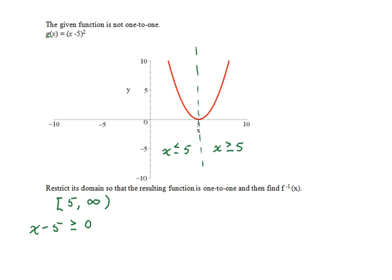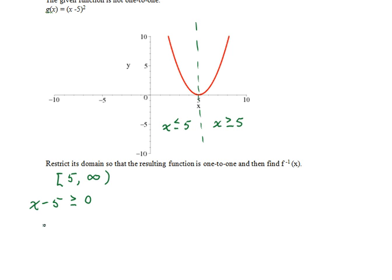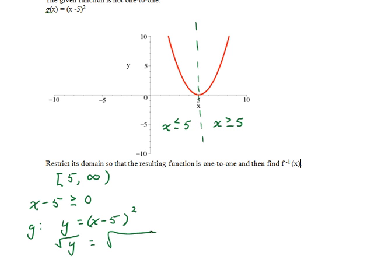Now as we proceed to find the inverse, we'll start with g, writing its two-variable equation as y equals x minus 5 squared. Since x minus 5 is greater than or equal to 0, as we take the square root of both sides, we do not need a plus or minus. When we take the square root of the square of x minus 5, we get the absolute value of x minus 5, which is just x minus 5 because the quantity is positive.